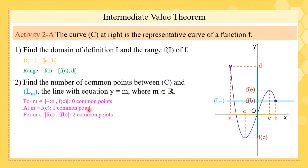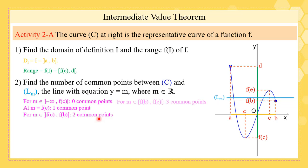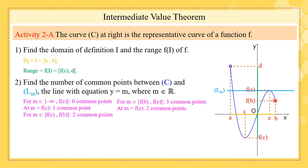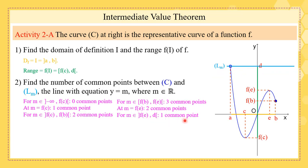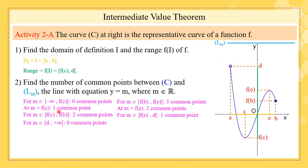From f(c) to f(b), open, we see two common points. From f(b) to f(e) we have three common points. At m equals f(e) exactly we have two common points. From f(e) to d we have one common point. When m belongs to [d, +∞) we have zero common points. So we can have zero, one, two, or three common points.